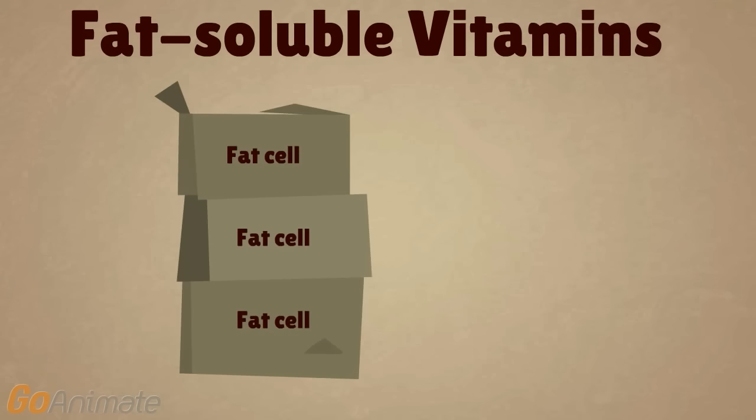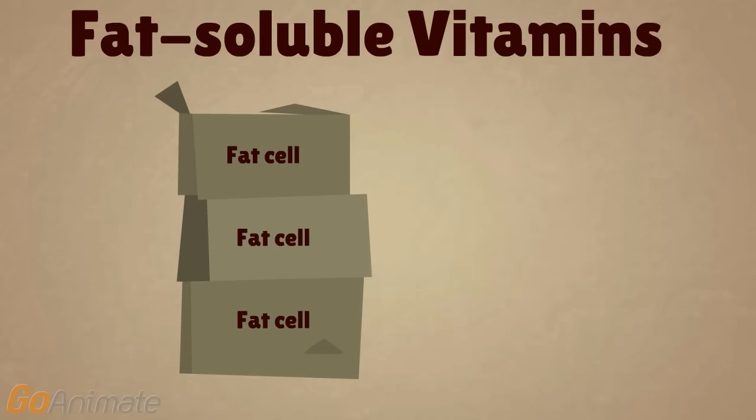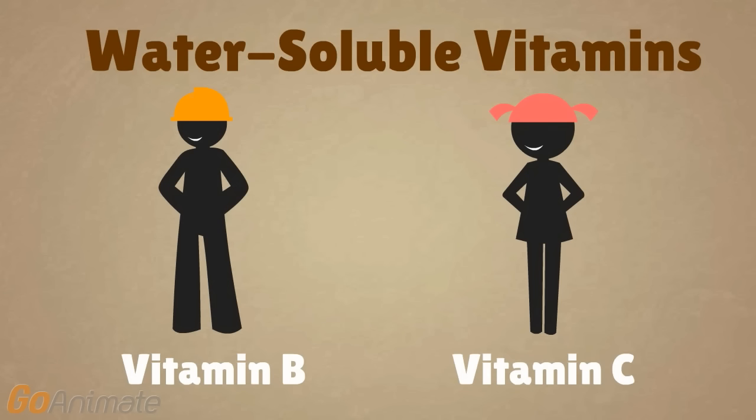Unlike water-soluble vitamins, fat-soluble vitamins are stored in fat cells when excess vitamin is present in the diet, to be used at a later time. Now let's take a look at two water-soluble vitamins, vitamins B and C.